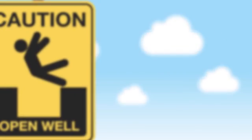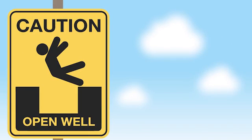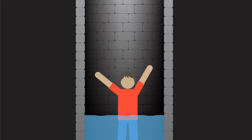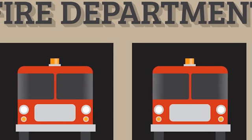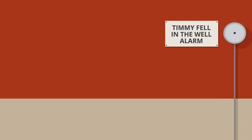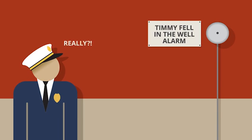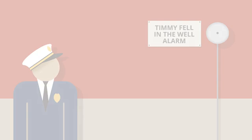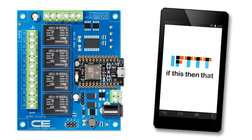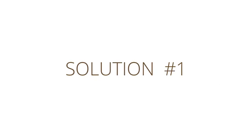So how could this device be used in a real-world scenario? Let's say, for instance, Timmy falls down a well, and let's add that this event happens a little too often — so much that the local fire department is taking special measures at the fire station just for this occurrence. Here are a few ways this device and the IFTTT app can be set up to work together for a solution to this problem. Solution number one.